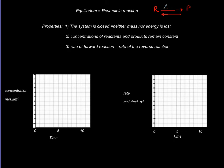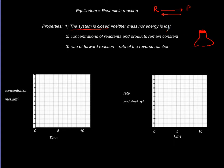Once you see a double arrow, that is the indication of equilibrium. There are a few attributes or properties to note. First, equilibrium is always taking place in a closed system — if you have a flask with reactants, make sure it is sealed so there is no matter being lost or gained, and we try to keep energy as insulated as possible.